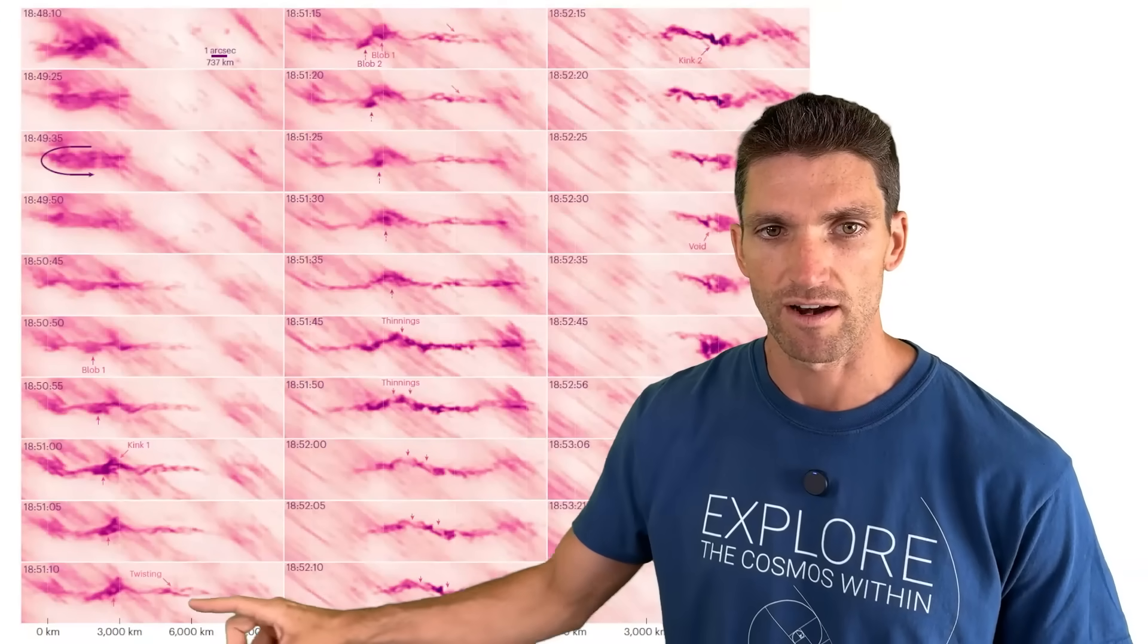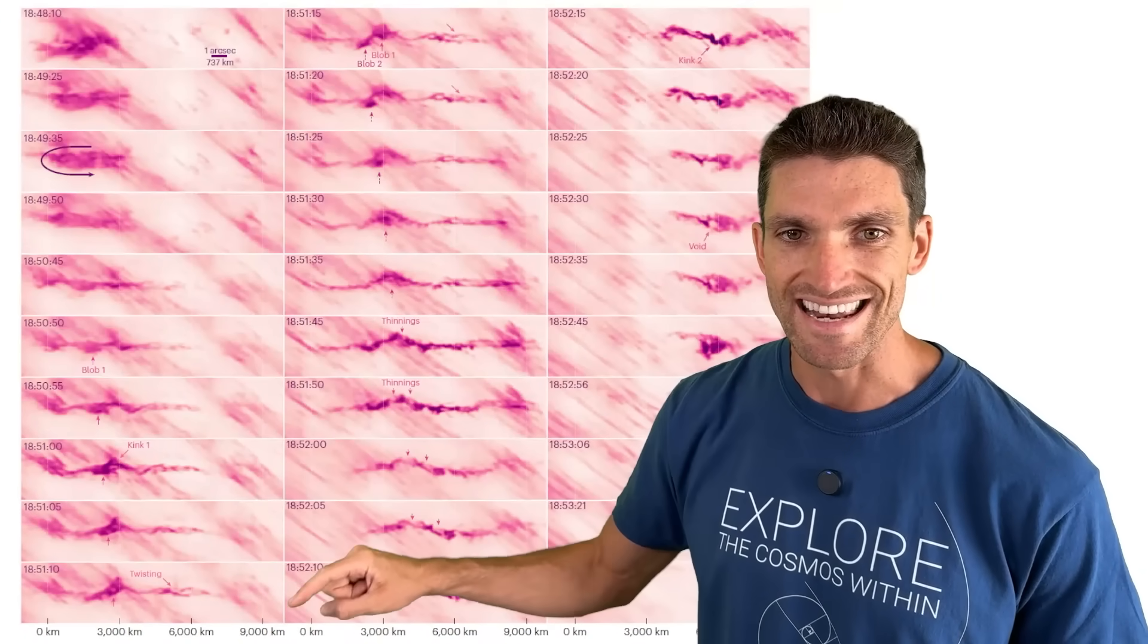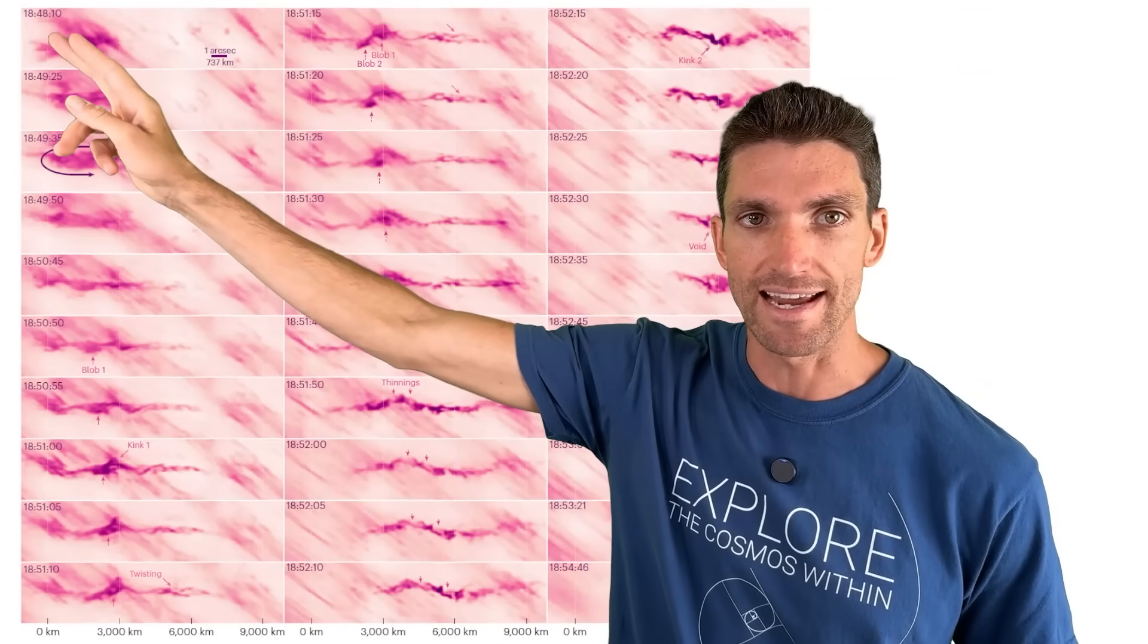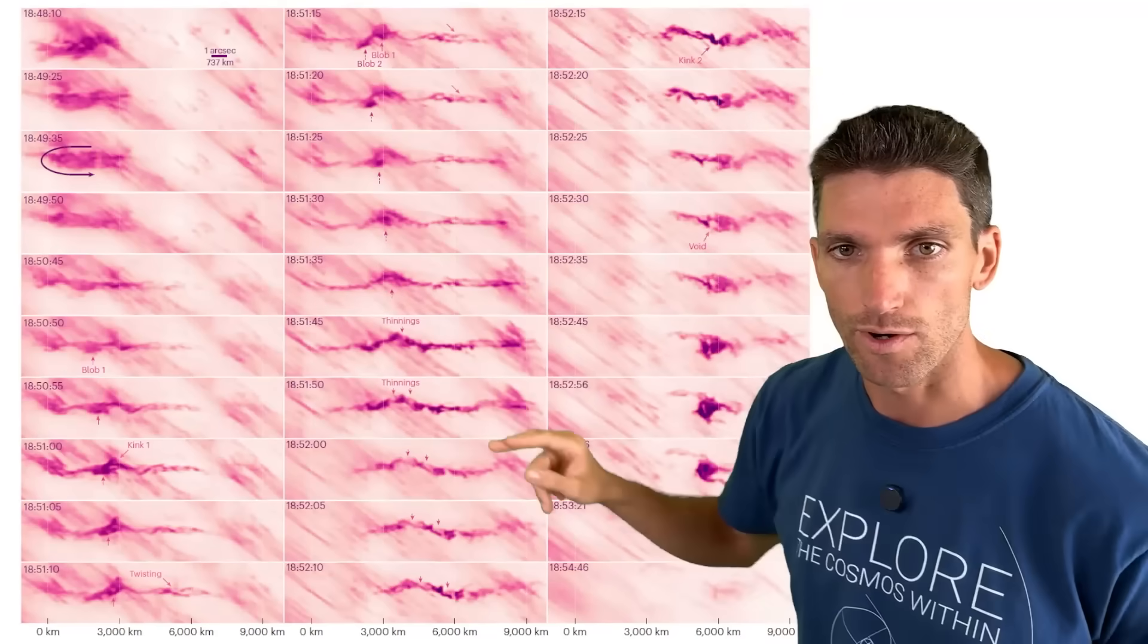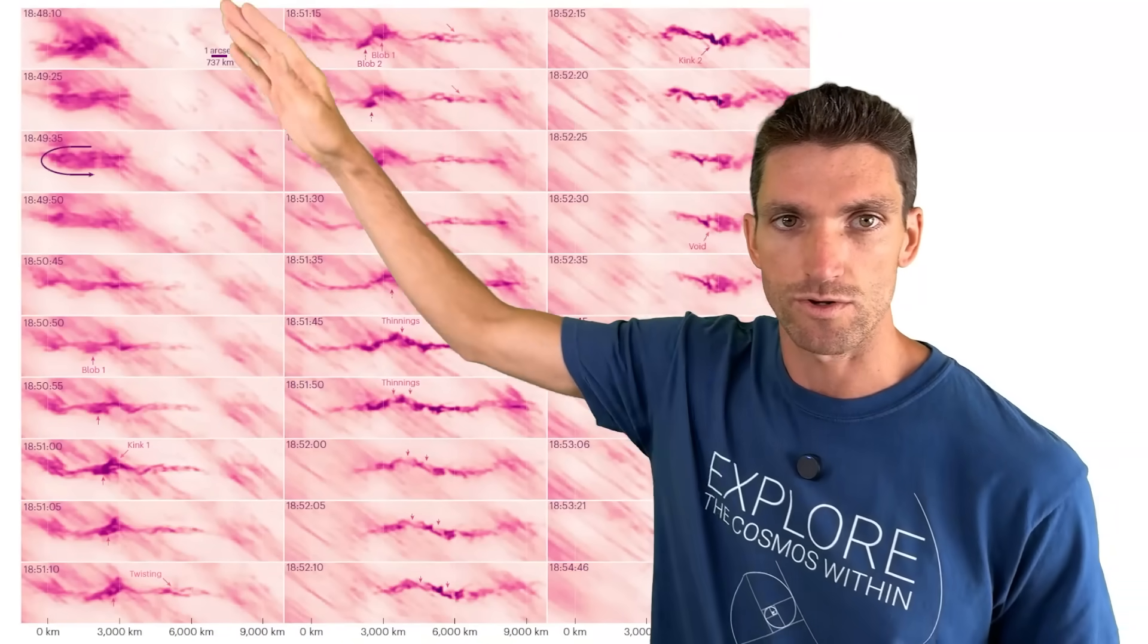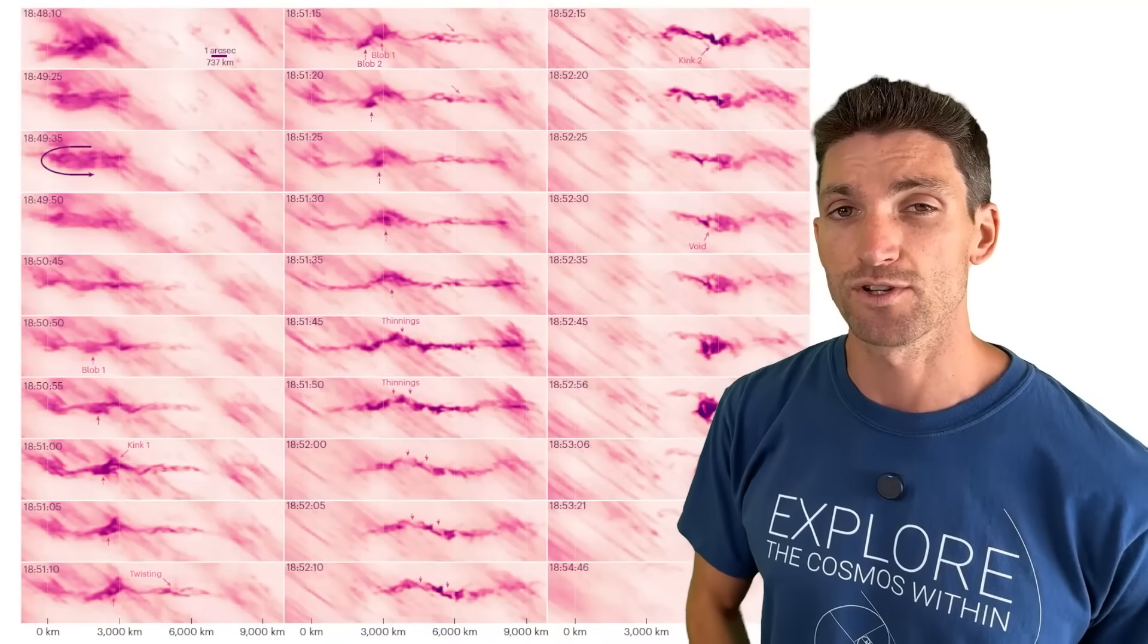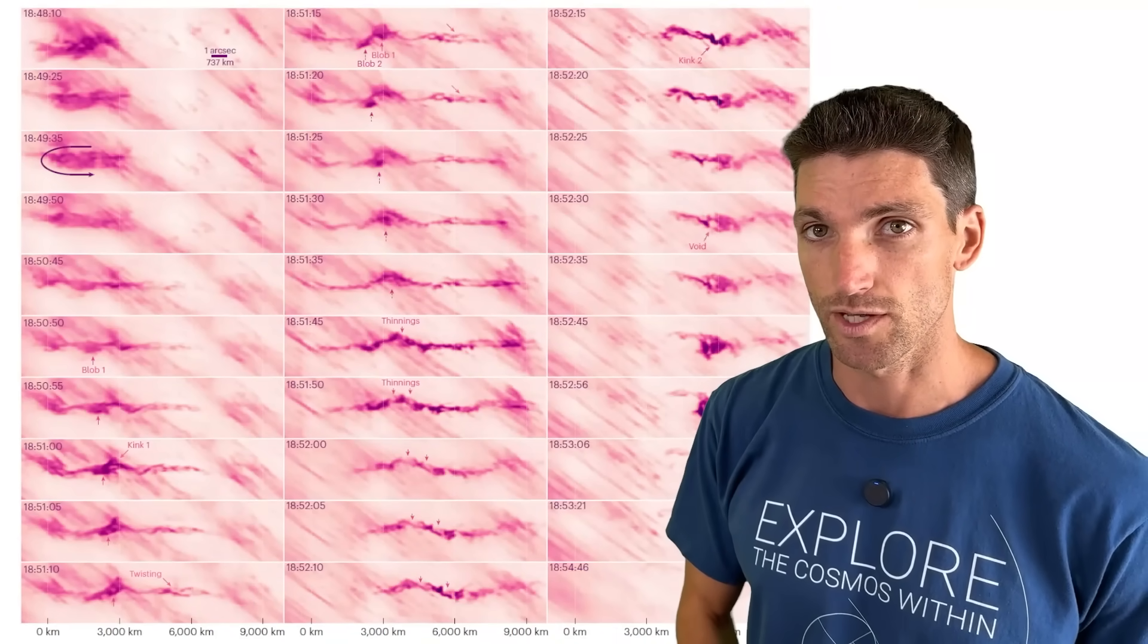First off, the scale there at the bottom, zero kilometers there, 9,000 kilometers across. And then the time, this is 1848 universal time going all the way to 1854. So we go down like this, next column, next column there. This is all observed on July 18th of 2023, by the way.